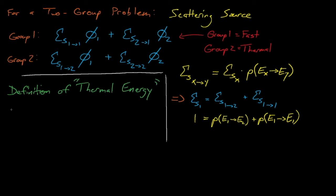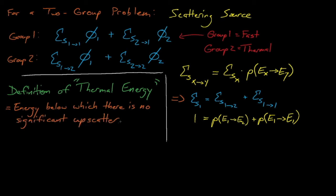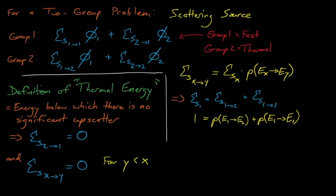The most common definition for thermal energy is that it corresponds to the point above which no significant upscatter occurs. In other words, neutrons can scatter from group 1-to-2, but not from group 2-to-1. For now we can take this to mean that the energy bounds in our equation are defined such that the group 2-to-1 scattering cross-section and probability is equal to zero. Likewise, the group x-to-y scattering cross-section is equal to zero whenever y is less than x.